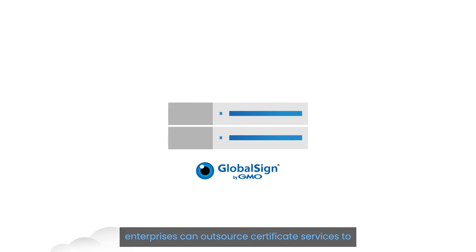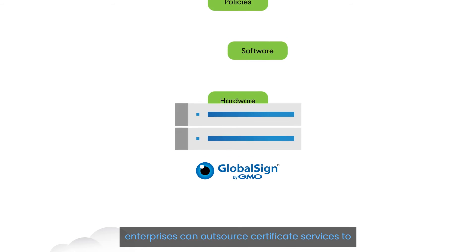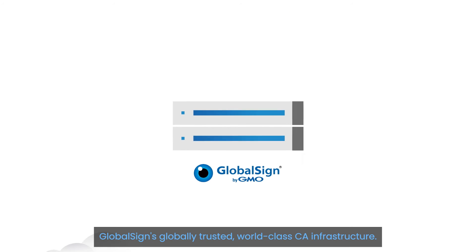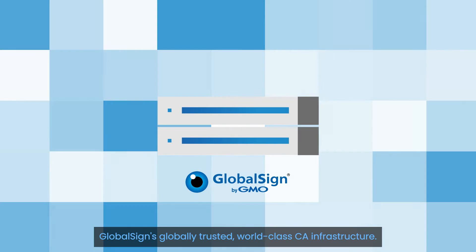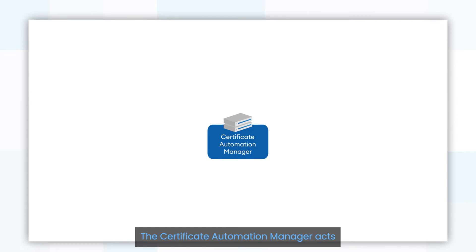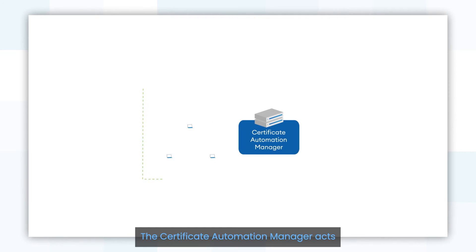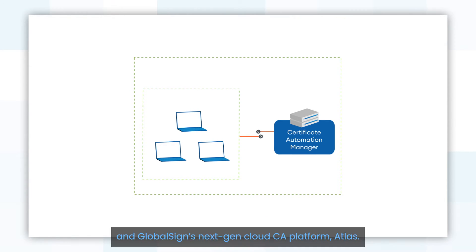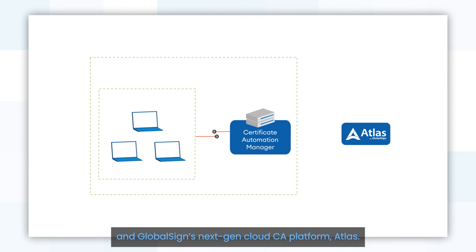enterprises can outsource certificate services to GlobalSign's globally trusted world-class CA infrastructure. The Certificate Automation Manager acts as a proxy between your Windows environment and GlobalSign's next-gen cloud CA platform, Atlas.